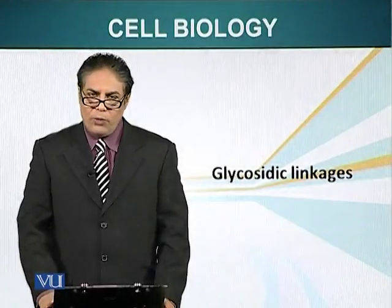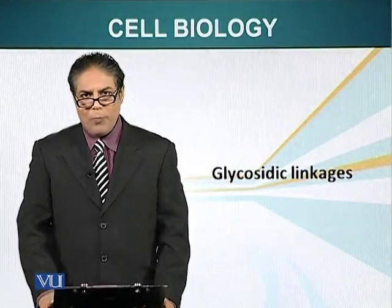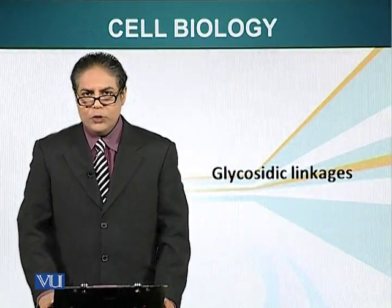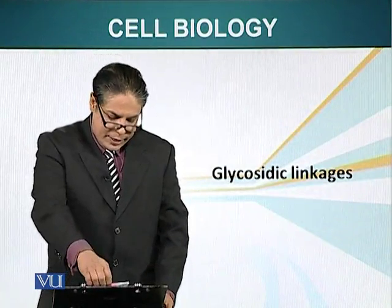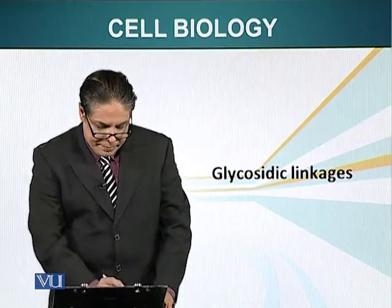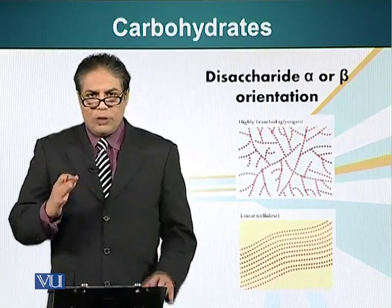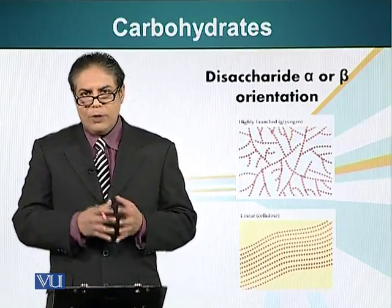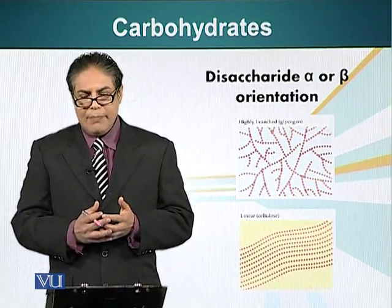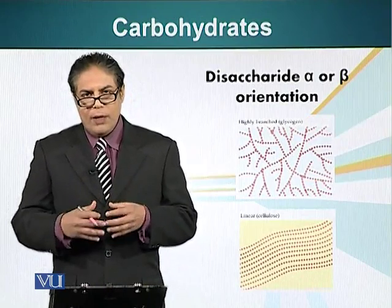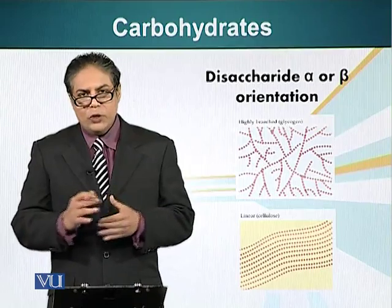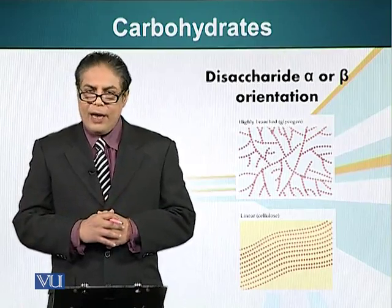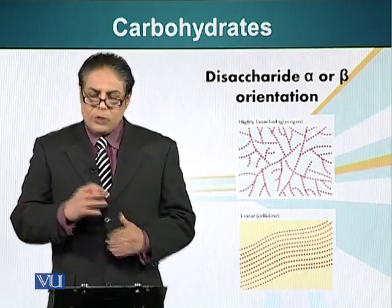In this module, we will talk about the nature of bond which is formed between two carbohydrate monomers. As we talked about in the previous module, the glucose molecule, when it becomes a circular molecule, it can adapt two configurations: the alpha and the beta configuration.